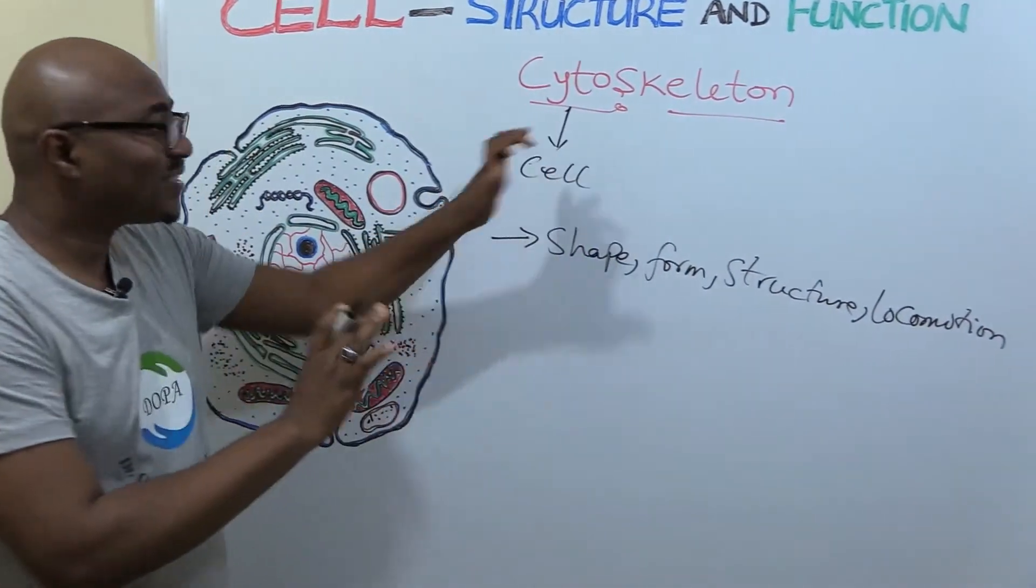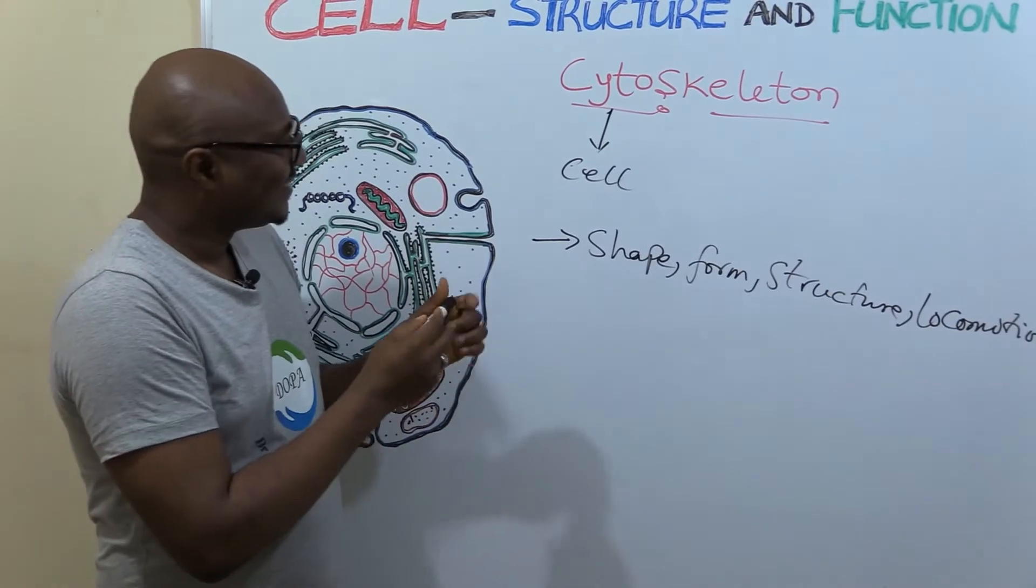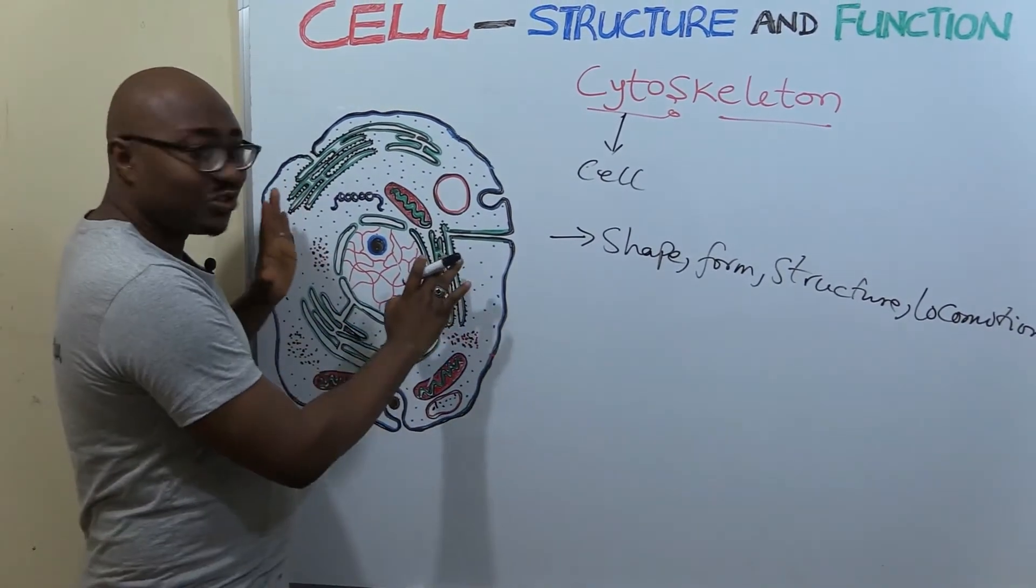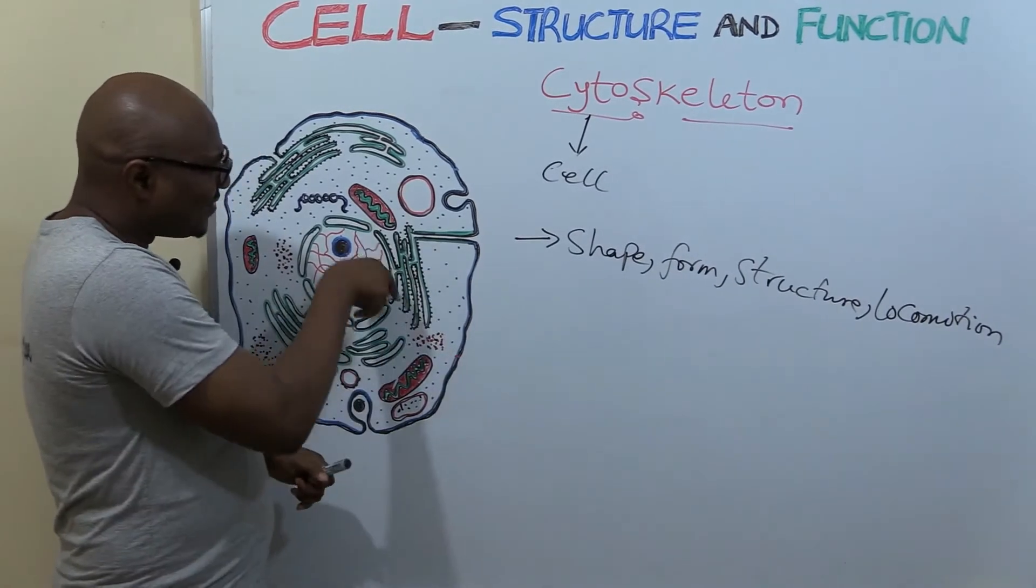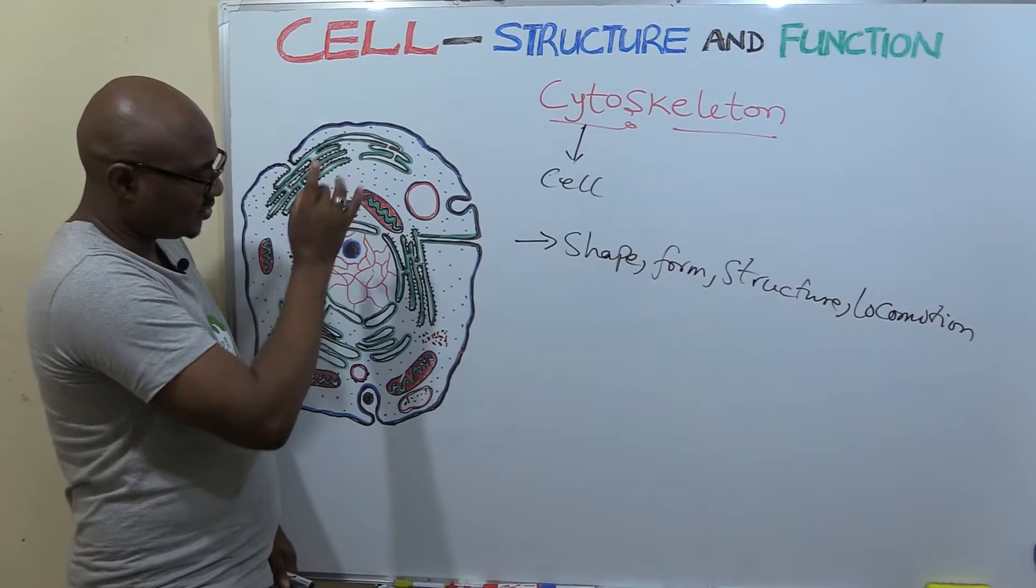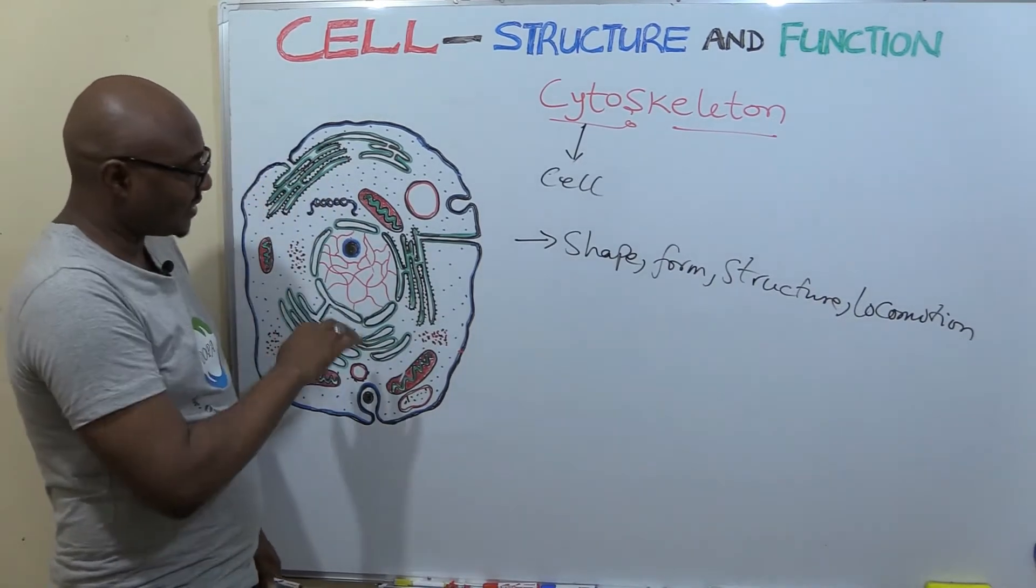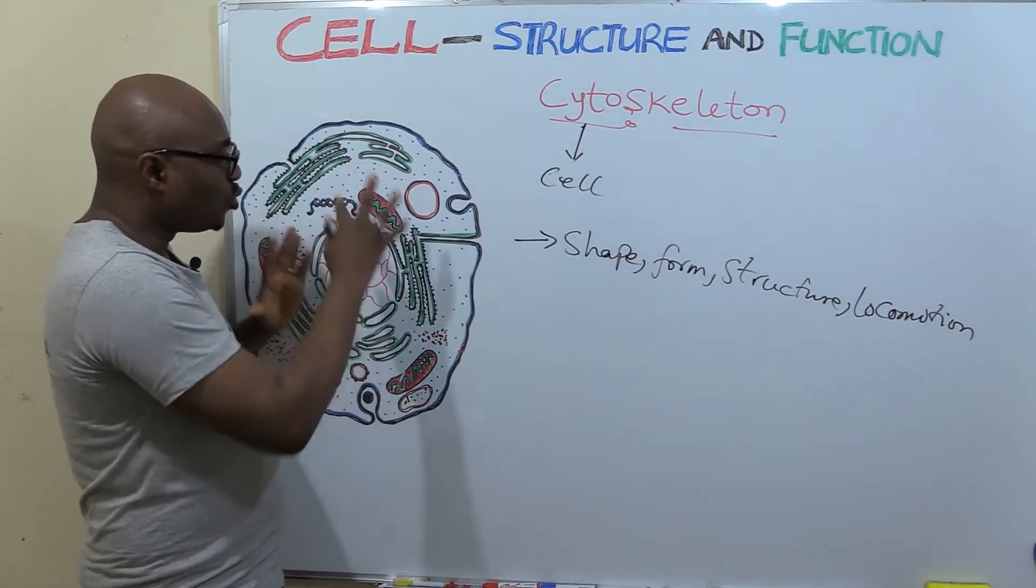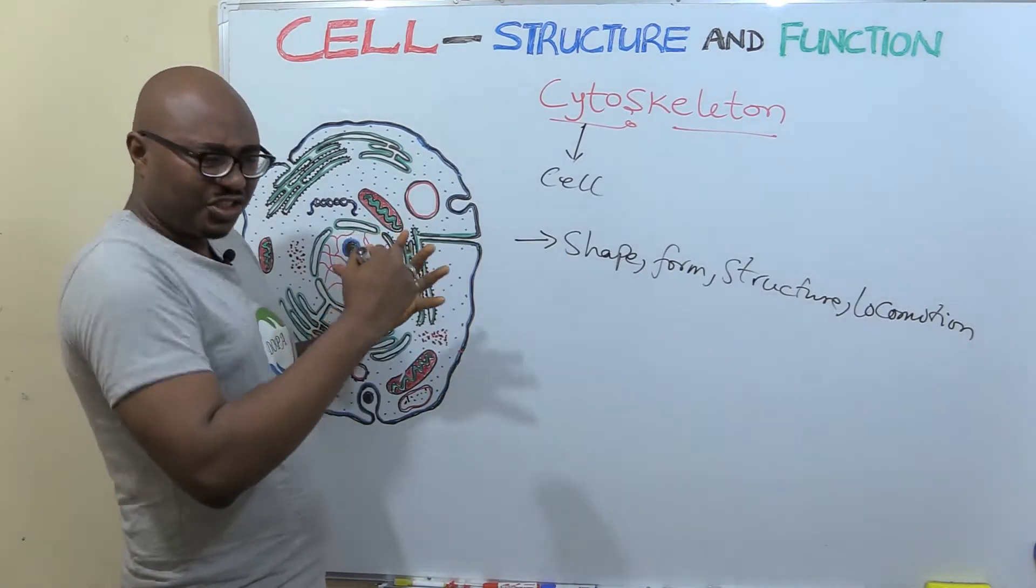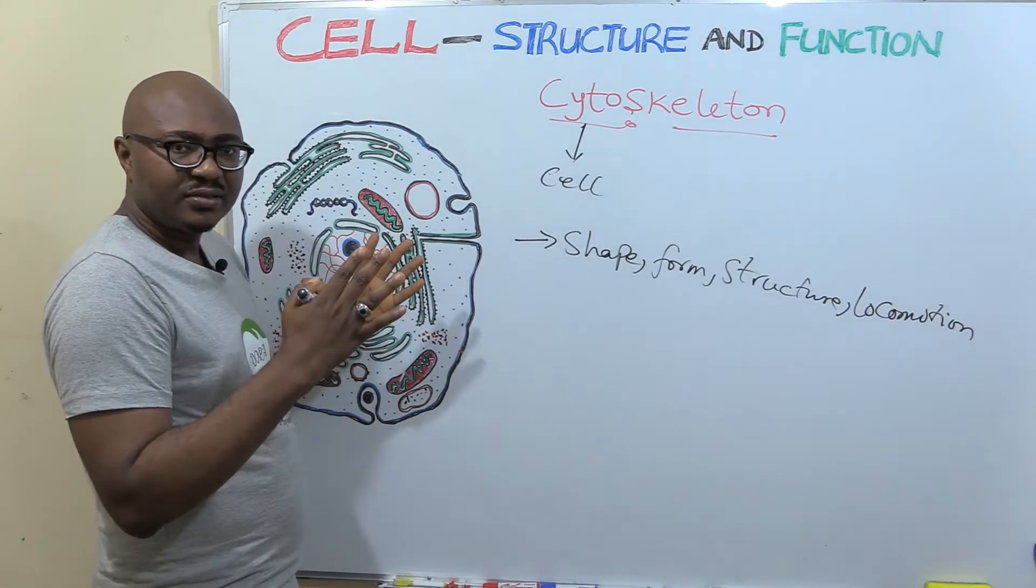So that's basically what cytoskeleton does in the cell. Although they are not drawn here because they are very tiny. They are actually filaments, very very tiny. But they are so numerous they give the cell its strength, shape.